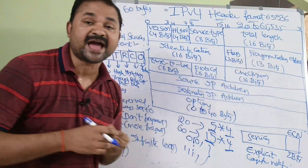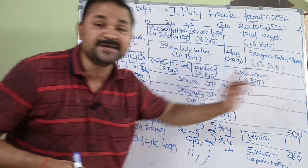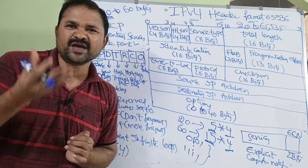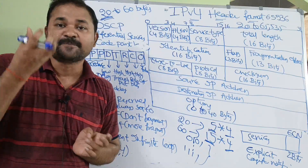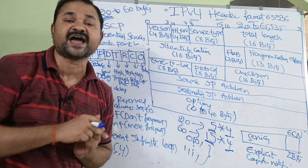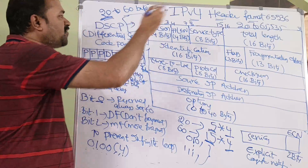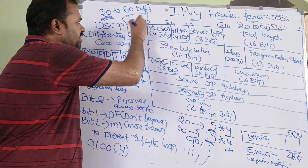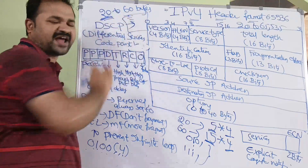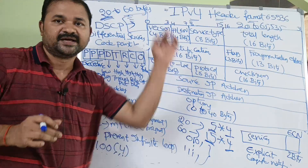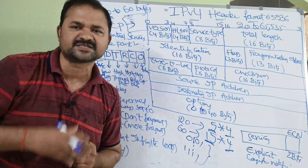And the next one is Fragment Offset, which is of size 13 bits. Offset means position — it specifies the position of the corresponding fragment relative to the original packet. For example, it could be at the 4th position in the fragment. So the offset specifies the position of the corresponding fragment.